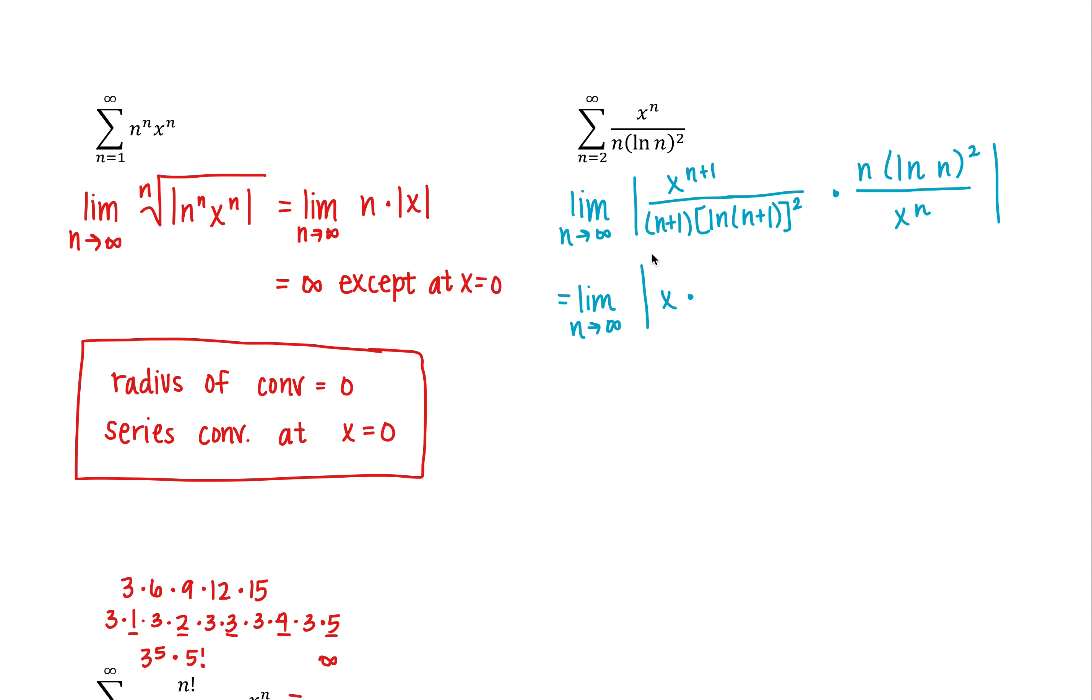Then I have n over n plus 1. And what I'm going to do with the two natural logs is I'm going to look at the natural log of n over the natural log of n plus 1 times itself. Just trying to keep things as simple as possible here.